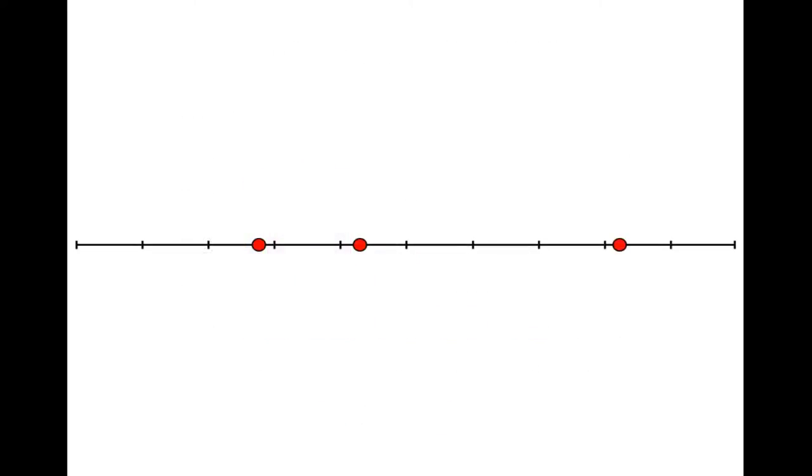Now it's important to understand why x and y aren't always the same. Consider this example: here there are four phone calls, and the problem is that two of them happen in the same interval. So the number of intervals in which a phone call happens is 3, meaning x is 3, but the total number of phone calls is 4, so y is 4.